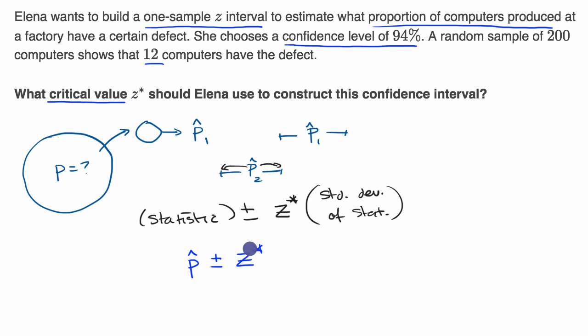Plus or minus some critical value times, and because to calculate the true standard deviation of the sampling distribution of the sample proportions you'd need the population parameter which we don't know, we multiply that times the standard error of the statistic. The key question here is what is our z star?